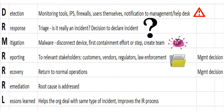The next R is for recovery. This is where activities are performed to return the organization to a normal state. For example, if a user is unable to work due to a malware infection, the PC would be cleaned, re-imaged, and reprovisioned back into production.